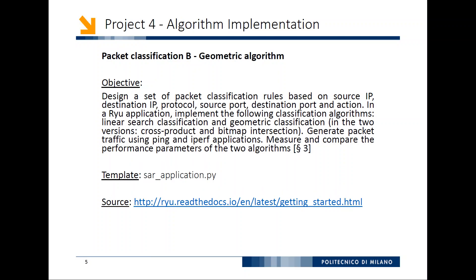Project four is the geometric classification algorithm, part of the packet classification family. You define the same set of rules as a table — a series of lists or a data structure — and then implement two versions: linear search and geometric classification, specifically the cross product and bitmap intersection approaches. Generate packet traffic using ping and iperf. In this case iperf is preferred over ping because you can generate different flows based on different TCP/UDP port numbers, which is more relevant for the classification analysis.